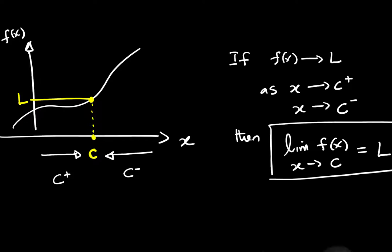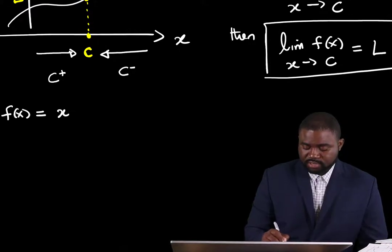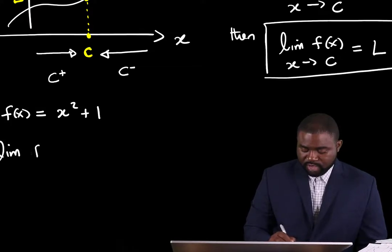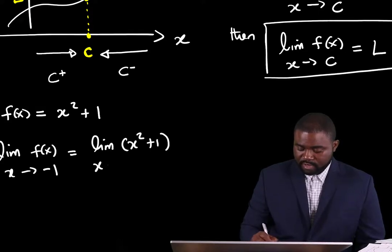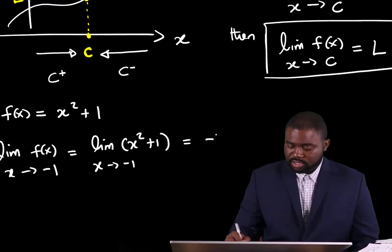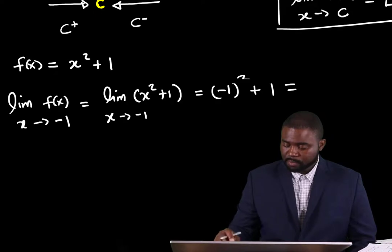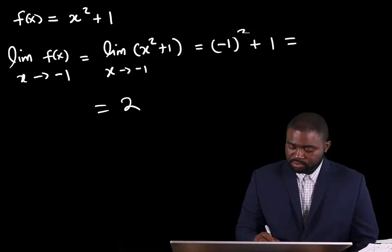For example, if the function f of x is equal to x squared plus 1, then the limit of f of x as x approaches negative 1 is equal to the limit of x squared plus 1 as x approaches negative 1. That is negative 1 all squared plus 1, and this will give us 2.